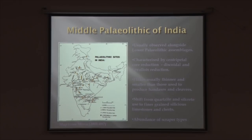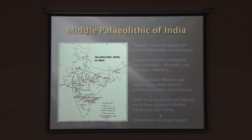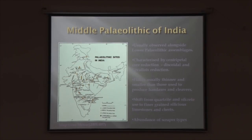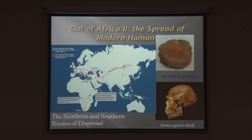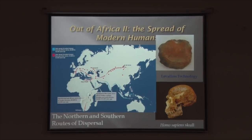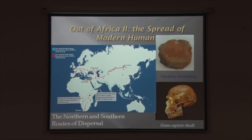Middle Paleolithic sites are abundantly rich in variety of scraper types, and their widespread distribution is not only in areas with Acheulean settlements — new areas were also colonized by Middle Paleolithic communities. This is generally associated with the expansion out of Africa. The first anatomically modern Homo sapiens, Homo idaltu, is dated to about 196,000 years ago, followed by the emergence of microlithic technology in East Africa around 60,000 years ago.